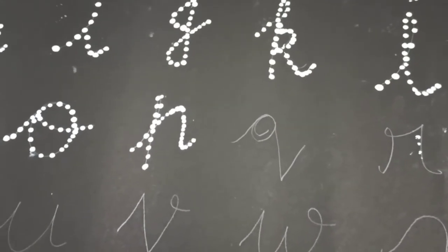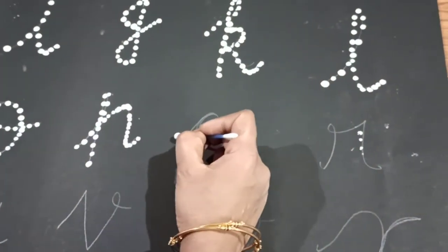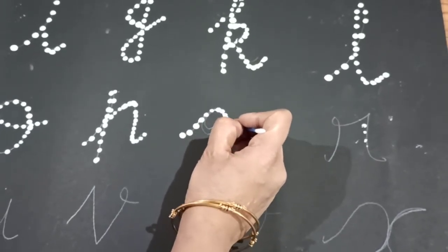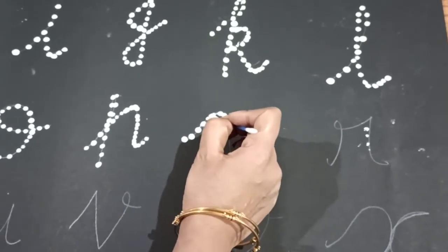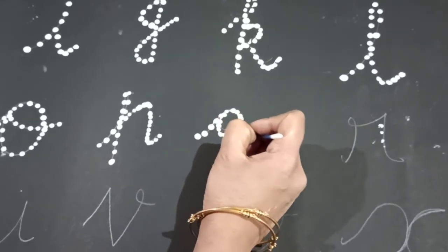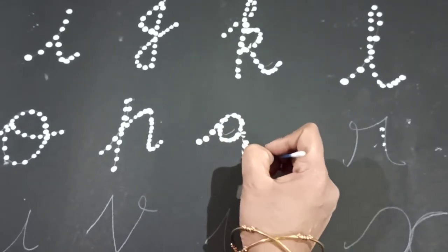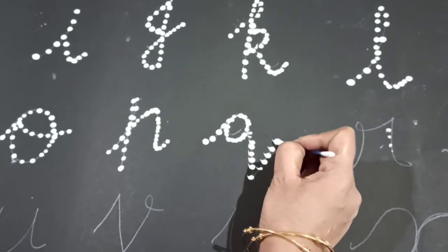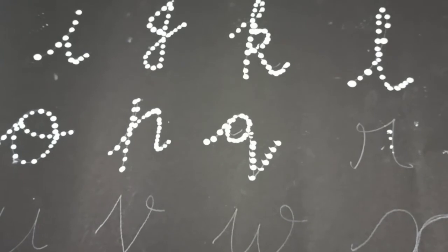Then after P, which letter children? Letter Q. So, slanting, and curve, then join that. Then again slanting, another slanting. This is the letter Q.